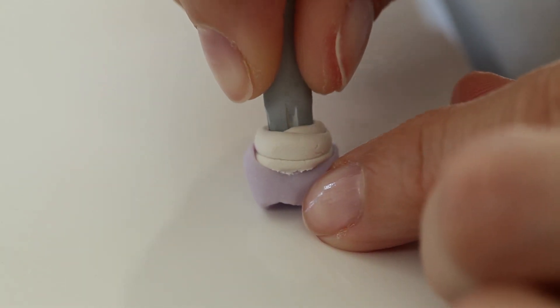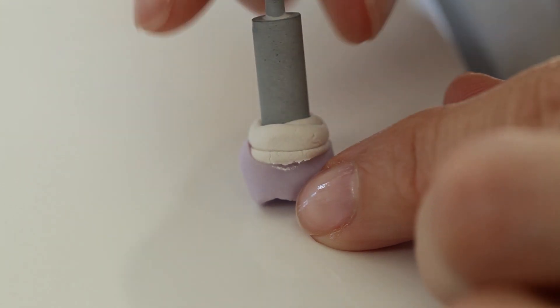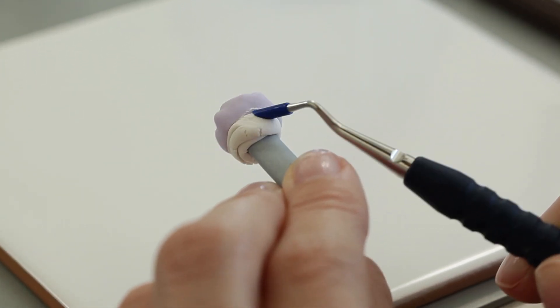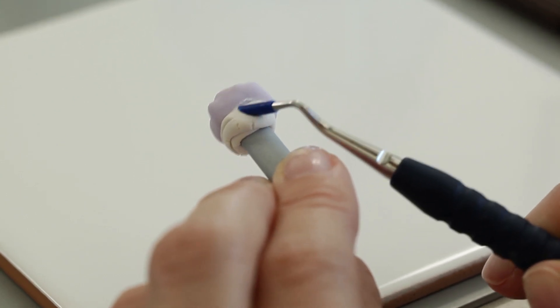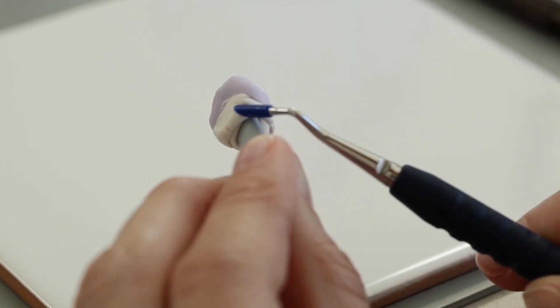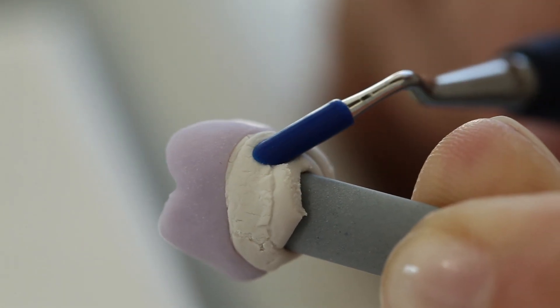Press the IPS Emax CAD crystallization pin deeply into the auxiliary firing paste. Smooth out displaced IPS object fix putty or flow with a plastic spatula from the margin towards the support pin, so that the pin is secured in the paste and the crown margin is supported.